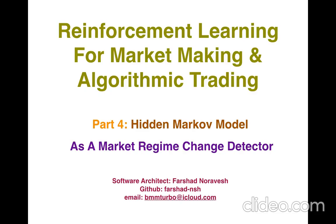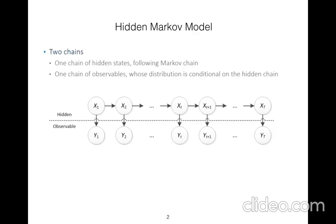I see Hidden Markov Model as a market regime change detector. As you know, Hidden Markov Model is based on two chains: one chain of hidden states following a Markov chain, and one chain of observables whose distribution is conditional on the hidden chain.